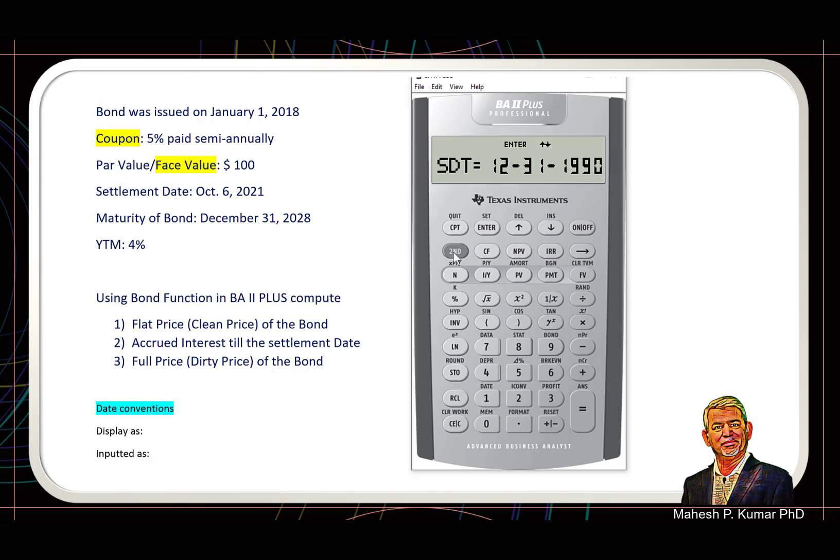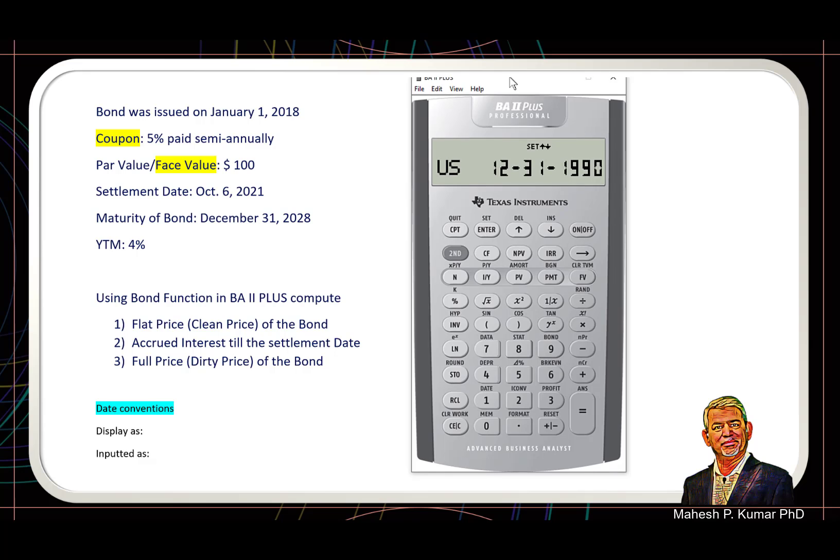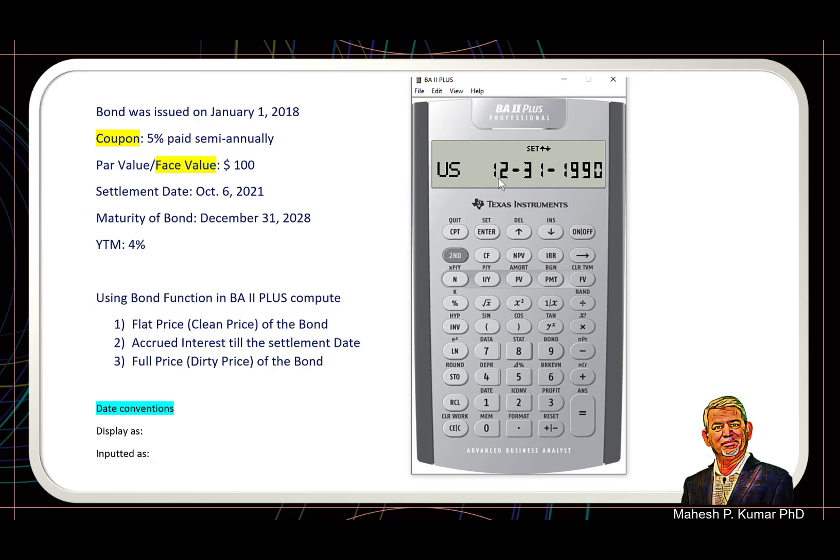But even before we go into the bond function, let us go to second and format. When we go into format function, first of all we see DEC—it is a decimal up to two decimal places. We go down and then go down, so it shows us that our calculator is by default using this date convention of US.